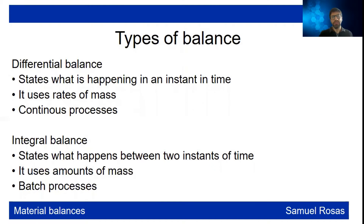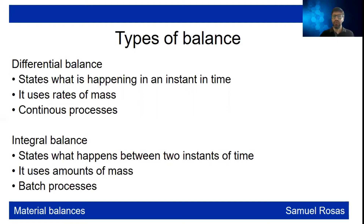There are two different types of balance. One is the differential balance, which is when the states are happening in an instant of time. It's a picture of a continuous process and it uses rates — kilograms per second or kilograms per hour, or something like that.